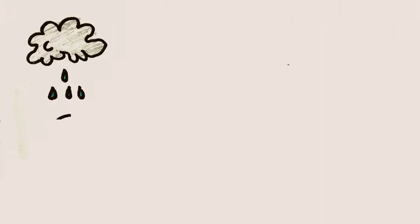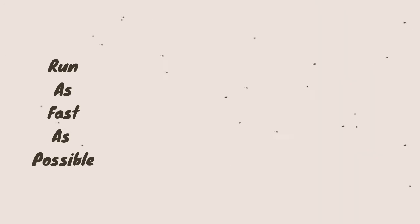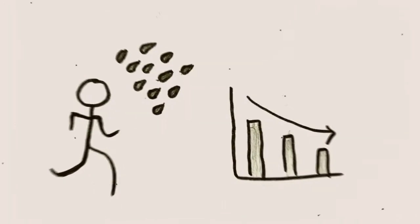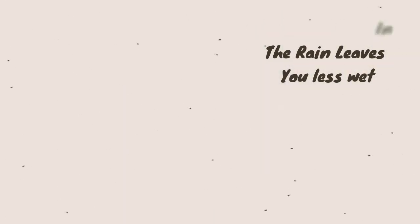If the rain falls straight down or if the wind blows it toward you, you should run as fast as possible. Although you run into raindrops, the decreased time in the rain leaves you less wet than if you move slower.